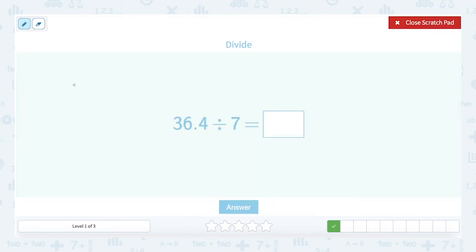So our dividend here is 36.4 and our divisor is 7. So I've got 36.4 divided by 7.